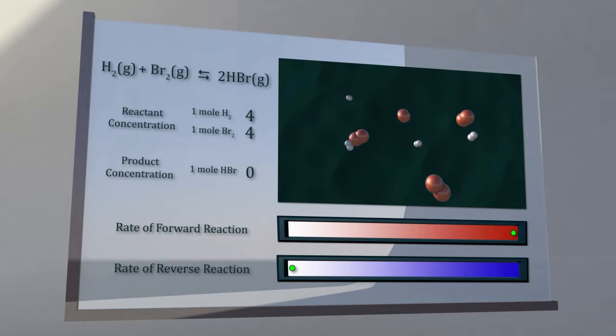Initially, the reaction vessel contains only the reactants, hydrogen gas and bromine gas.